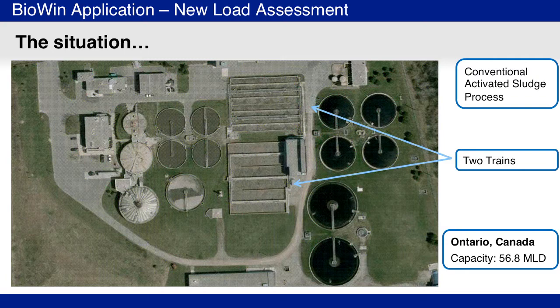This plant is a conventional activated sludge process incorporating nitrification, chemical phosphorus removal, and sludge processing. The Stage 1 nominal rated capacity of the plant is 56.8 ML per day.